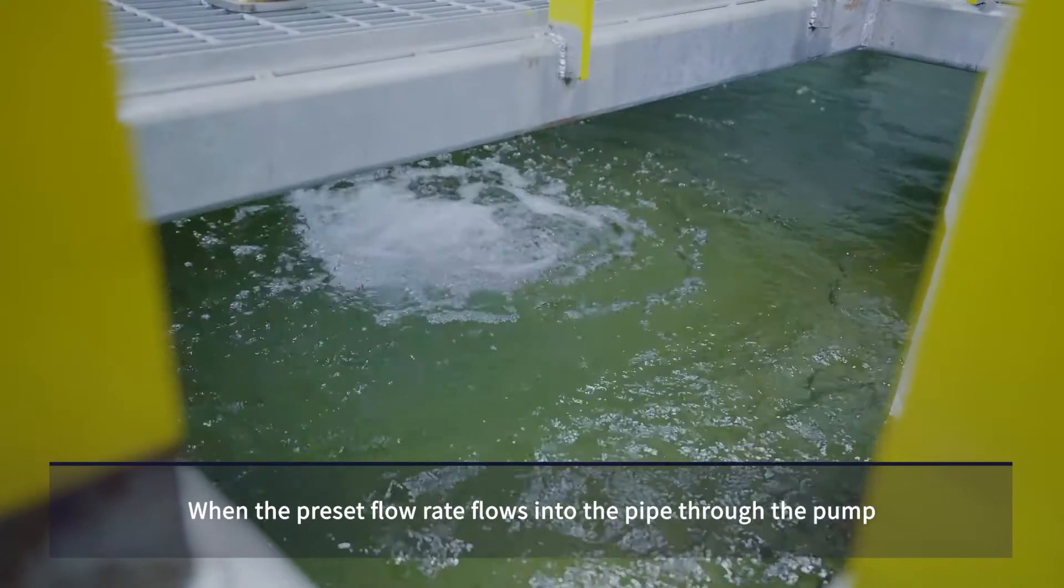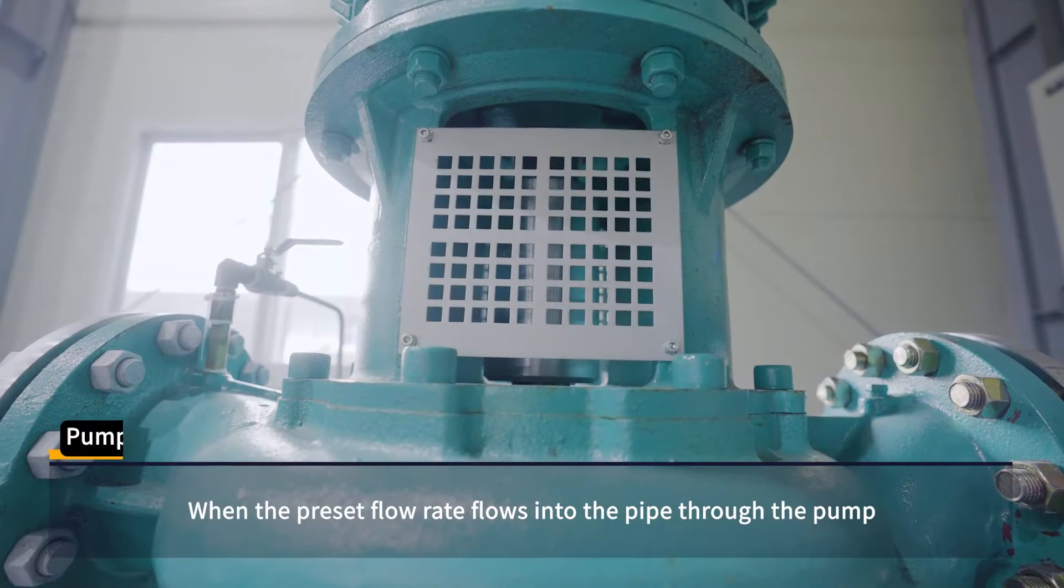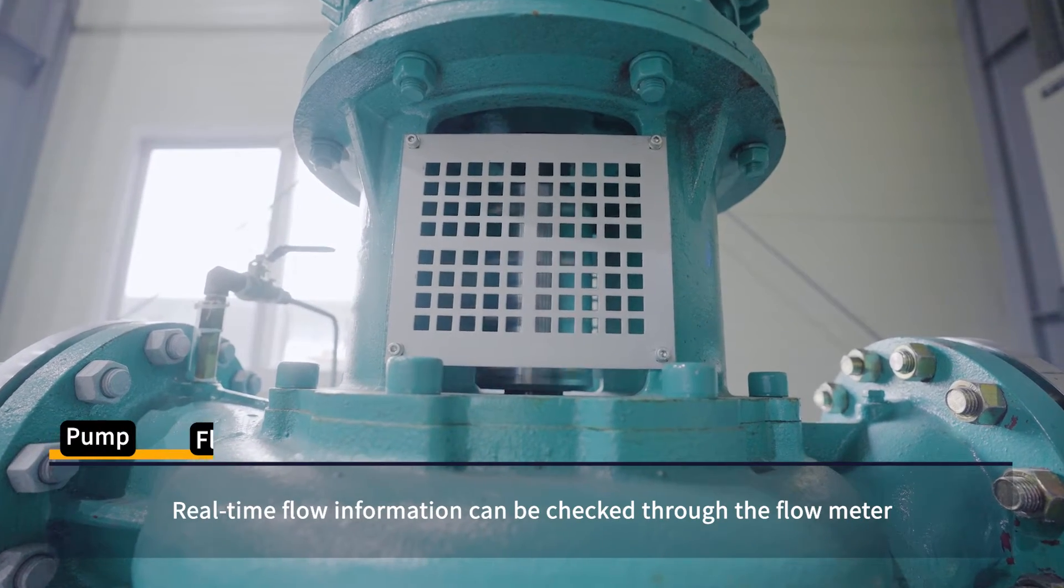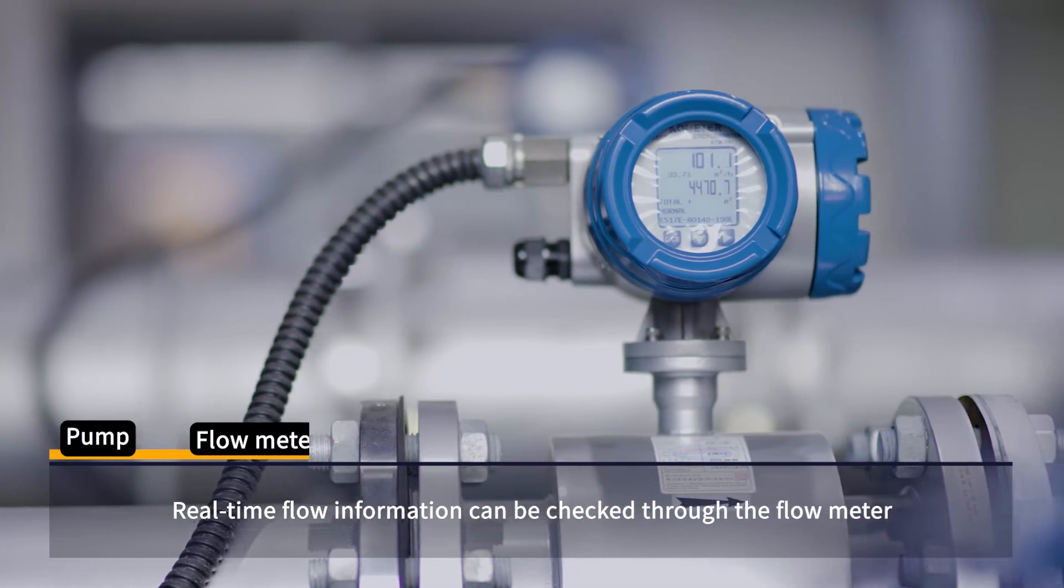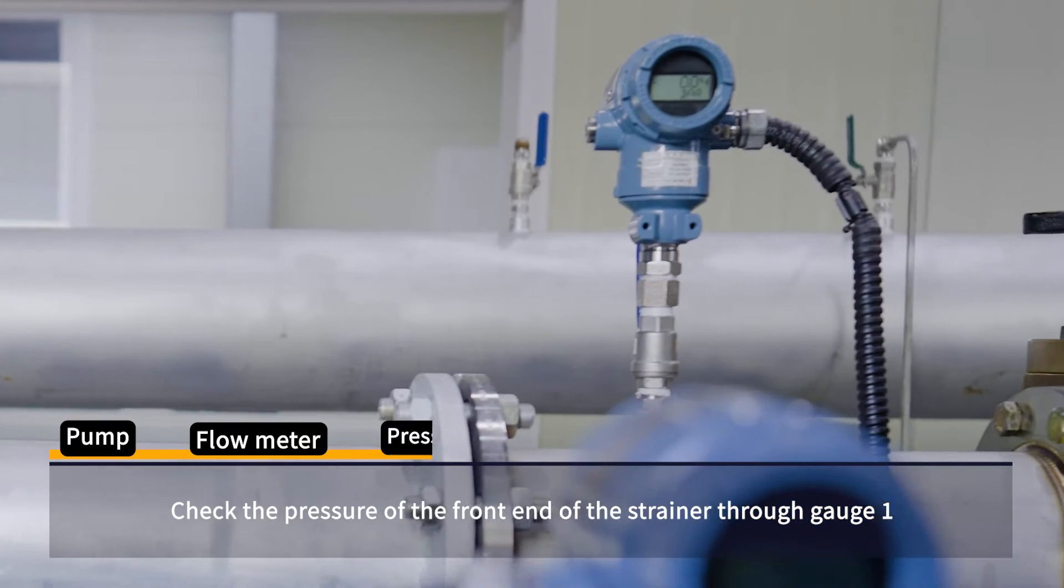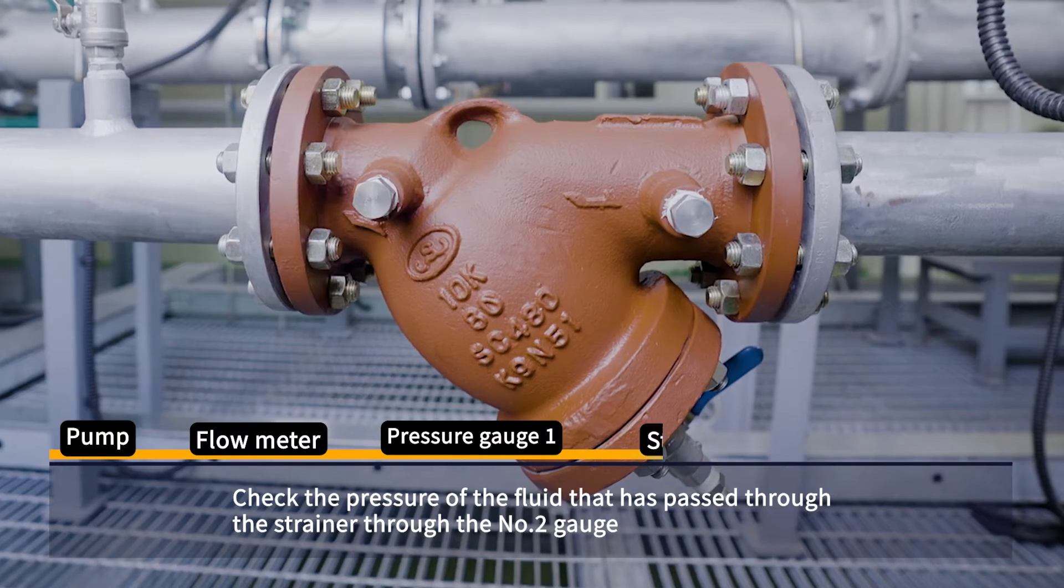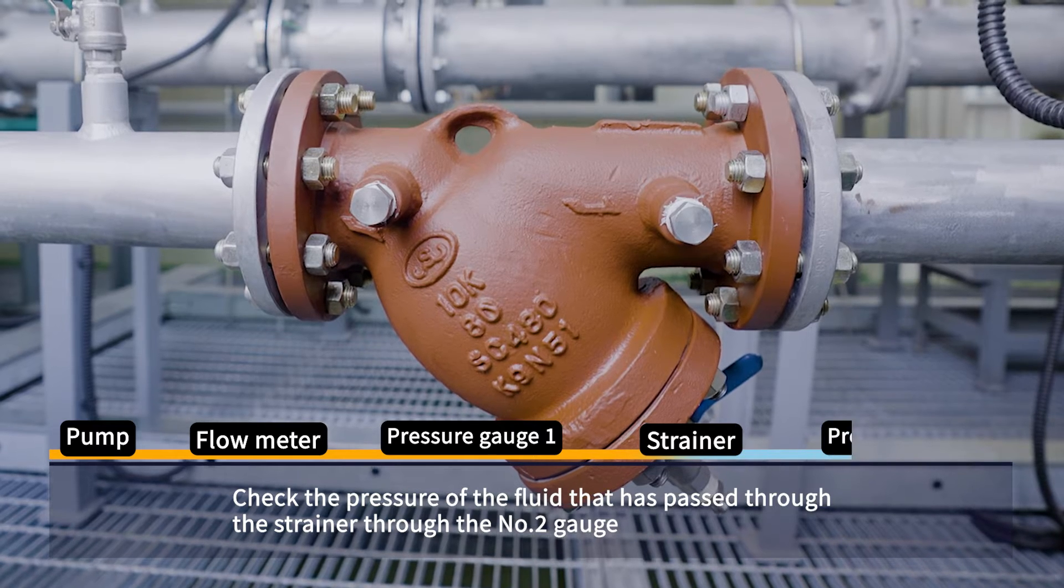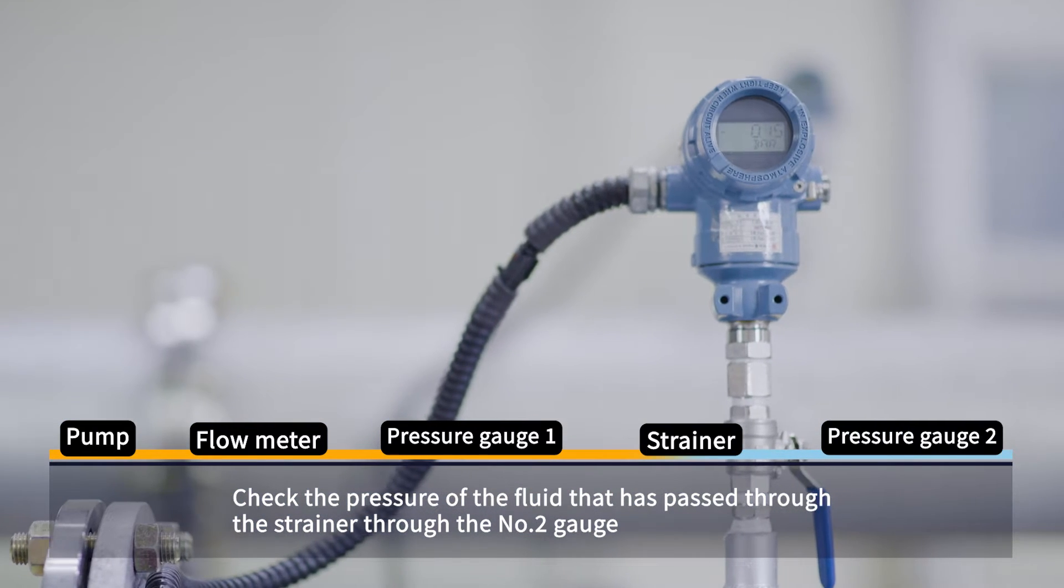When the preset flow rate flows into the pipe through the pump, real-time flow information can be checked through the flow meter. Check the pressure of the front end of the strainer through gauge 1. Check the pressure of the fluid that has passed through the strainer through the number 2 gauge.